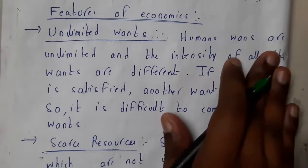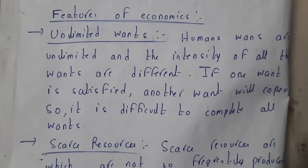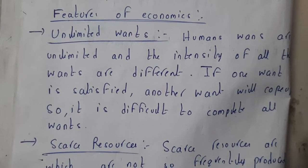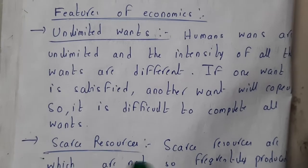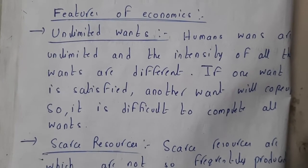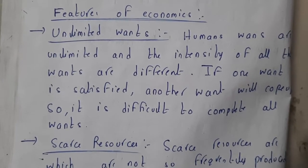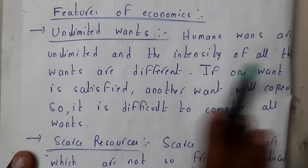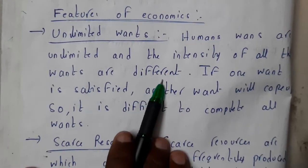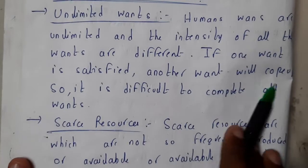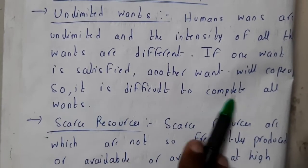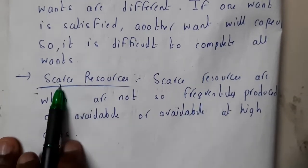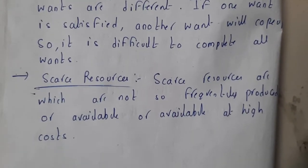There are a few major features. The first feature is unlimited wants. We will always have unlimited wants — if you get one thing you'll be asking for another, and it's a chain process which will never end. Human wants are unlimited and the intensity of all wants is different, so if one want is satisfied, another one will come up.